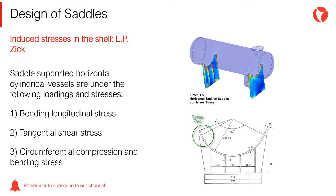Saddle-supported horizontal cylindrical vessels are under the following loadings and stresses: bending longitudinal stress, tangential shear stress, and circumferential compression and bending stress.